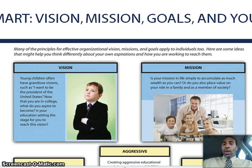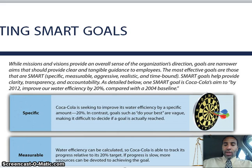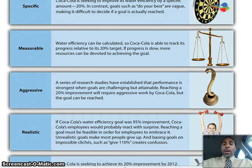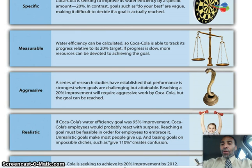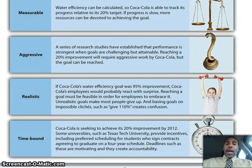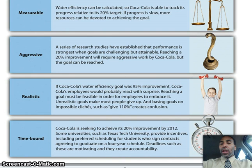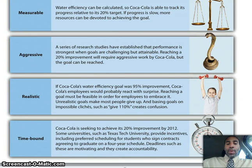Goals also have to be realistic — that just makes sense. Don't give someone a crazy goal like selling 100 cars in one day. If Coca-Cola's water efficiency goal were 95% improvement, employees would react with surprise. Reaching a goal must be feasible for employees to embrace it. Unrealistic goals make most people give up, and basing goals on impossible clichés such as 'give 110%' creates confusion. Goals also need to be time-bound: Coca-Cola is seeking to achieve its 20% improvement by 2012. Deadlines are motivating and create accountability.